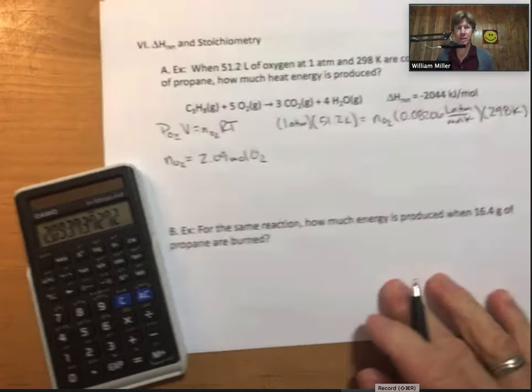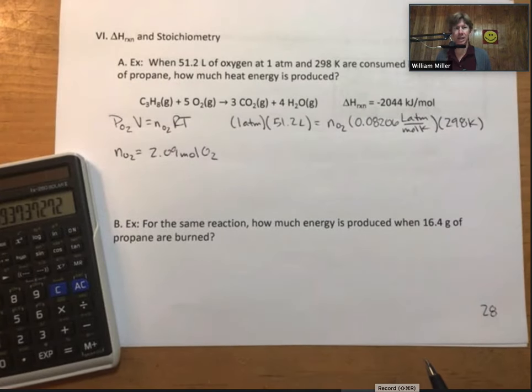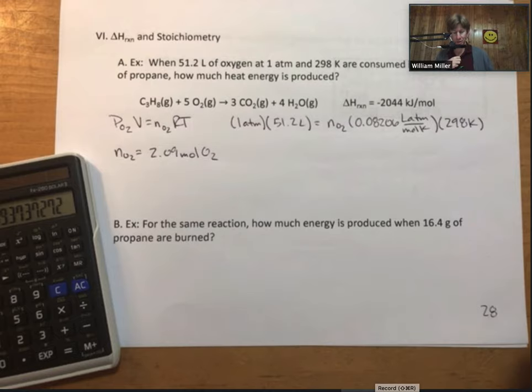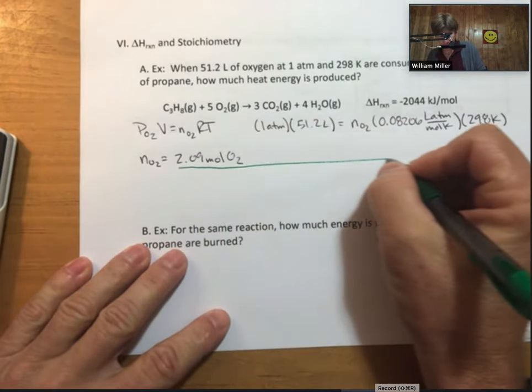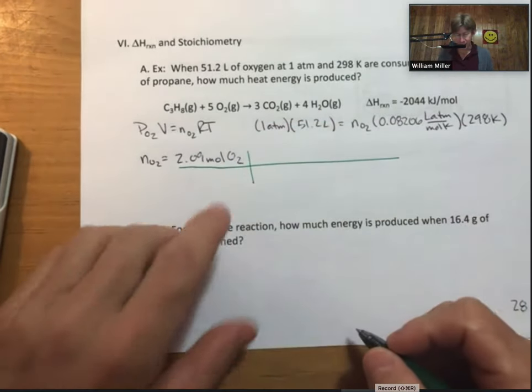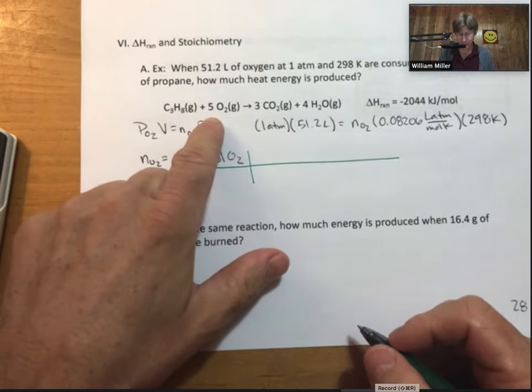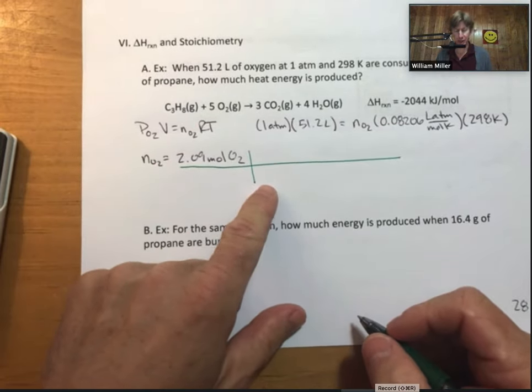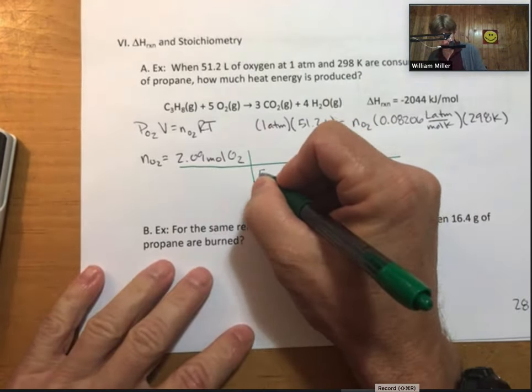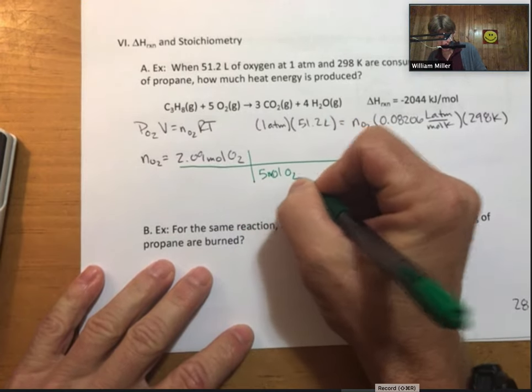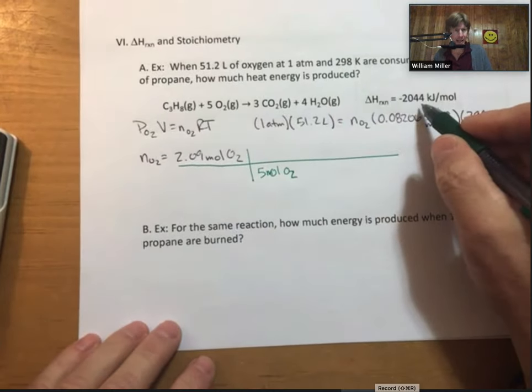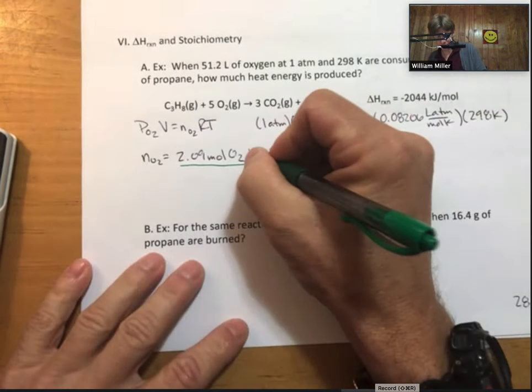I always do my ideal gas law separate from my picket fence, my system for doing stoichiometry problems. So I'll take my 2.09 moles. I know that for oxygen, for every 5 moles of oxygen, I get negative 2,044 kilojoules.